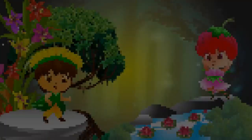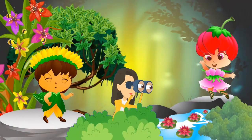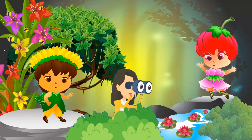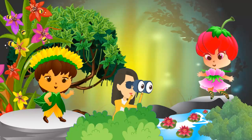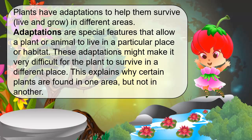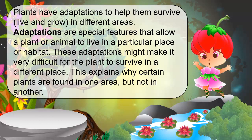Let's go! Can you see these plants around me? Can you find these plants in the same place? No, you can't. Plants have adaptations to help them survive in different areas. Adaptations are special features that allow a plant or animal to live in a particular place or habitat. These adaptations might make it very difficult for the plant to survive in a different place. This explains why certain plants are found in one area but not in another.